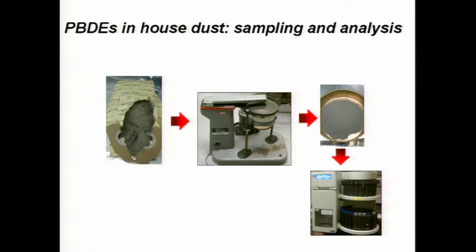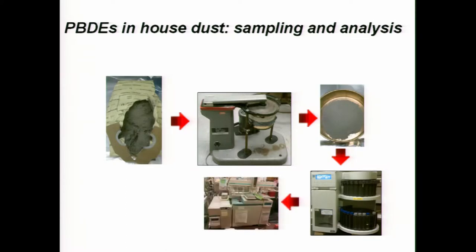When we're doing the extraction, we're using something called an accelerated solvent extractor, which basically puts the dust at high pressure and high temperatures and forces all of the chemicals that we're interested in measuring out of the dust into solution. Then once we have the chemicals in solution, we're going to clean them up and analyze them using the GCMS.